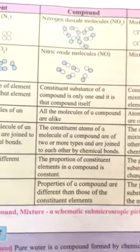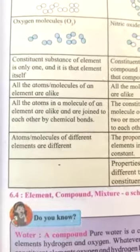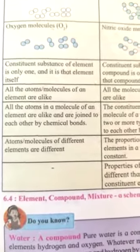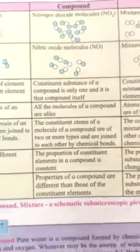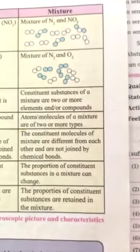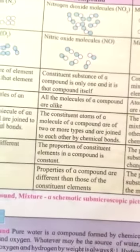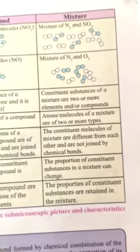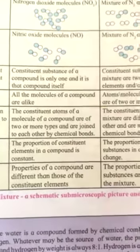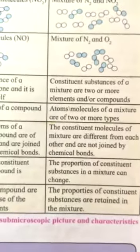In an element, all atoms are the same. In a compound, all atoms are also the same type but joined by chemical bonds of two or more types. In a mixture, atoms are of two or more different types and are not joined by chemical bonds. The properties of compounds are different from the constituent elements, whereas in a mixture, the properties of the constituent substances remain the same.